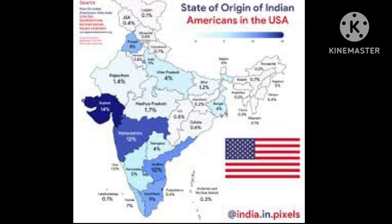This is the map of the state of origin of Indian Americans in the United States. Gujarat leads at 14%, Maharashtra at 12%, and Andhra Pradesh also has a high number. The South is very interested in going to the US. The North is mostly blank — Punjab contributes 8%, Uttar Pradesh 4%, and West Bengal 4%. Have a look at this map.